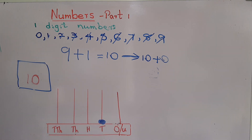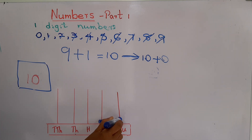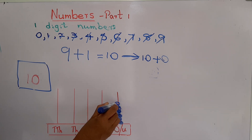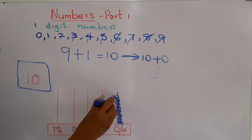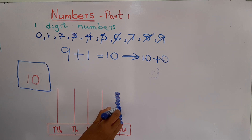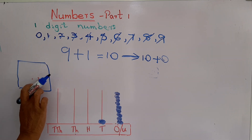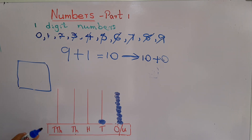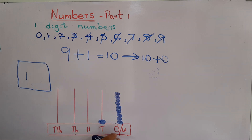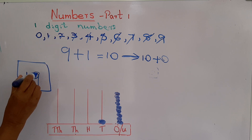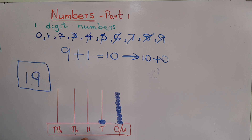Then if we add more rings to the ones place — 1, 2, 3, 4, 5, 6, 7, 8, 9 — I've added 9 more rings to the ones place. Now let's see what number this abacus represents. Tens place: how many? 1. Ones place: how many? 9. Number 19 is represented by this abacus.